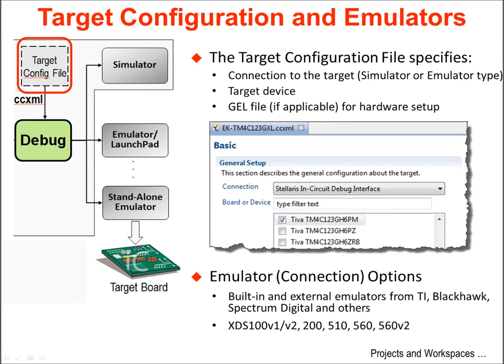The target configuration file specifies the connection to your target. This target can be an emulator, an evaluation board and emulator combination, or a stand-alone emulator connected to a target. The target device and the emulator to be used must be specified. If applicable, GEL files can be used to initialize the hardware setup.